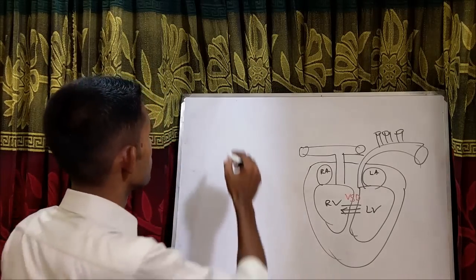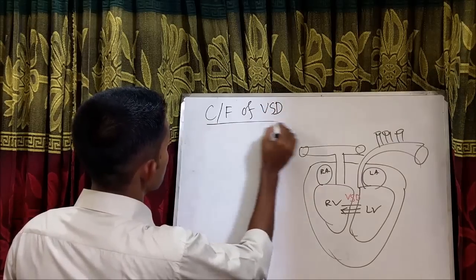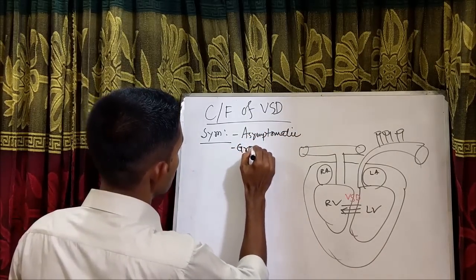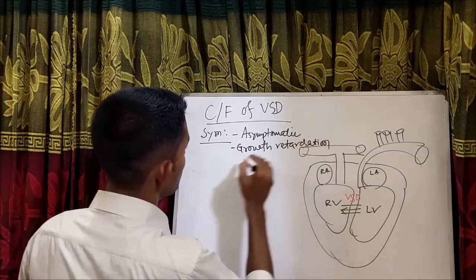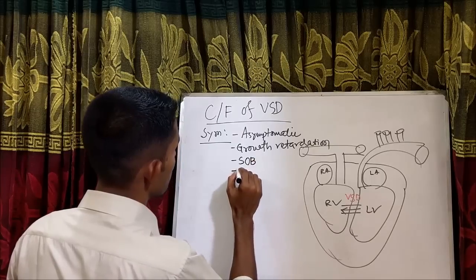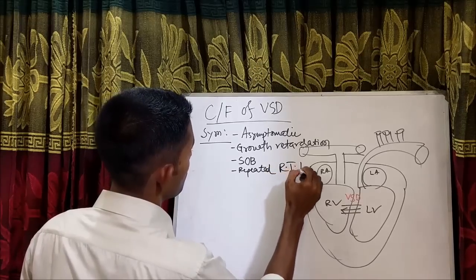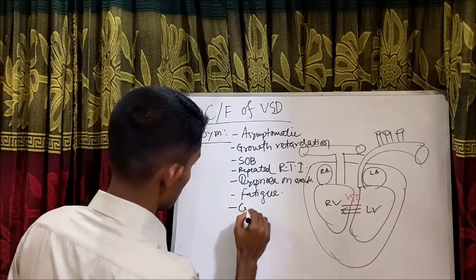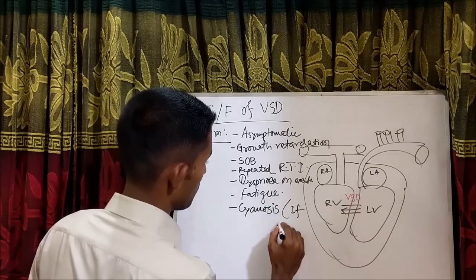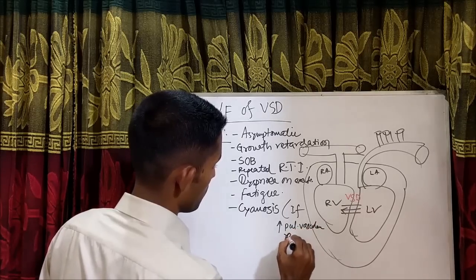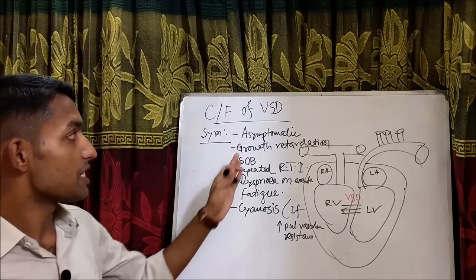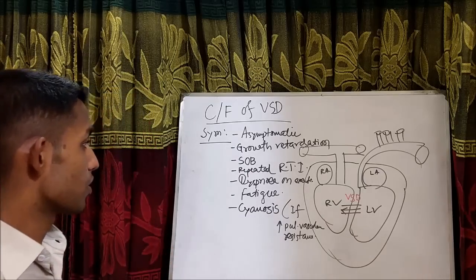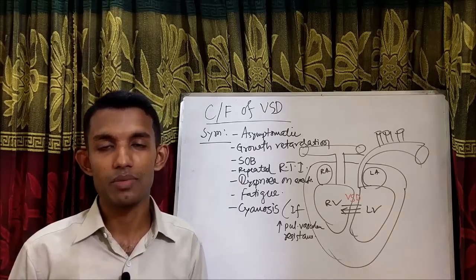Now the clinical features of VSD: the VSD may be asymptomatic, and there may be growth retardation. There is shortness of breath, repeated respiratory tract infections, dyspnea on exertion, fatigue, and cyanosis if there is development of Eisenmenger syndrome from VSD.